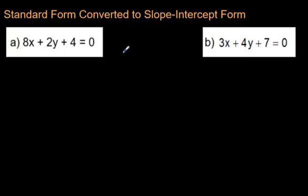Okay, today we're going to go from standard form, which is the form that you see right here, 8x plus 2y plus 4 equals 0. There's another one over here. We're going to do two questions today and convert them into slope-intercept form.